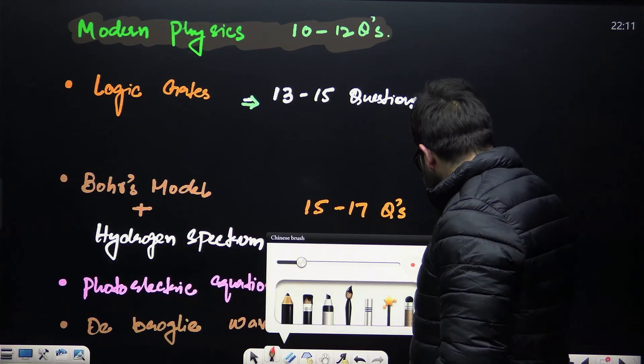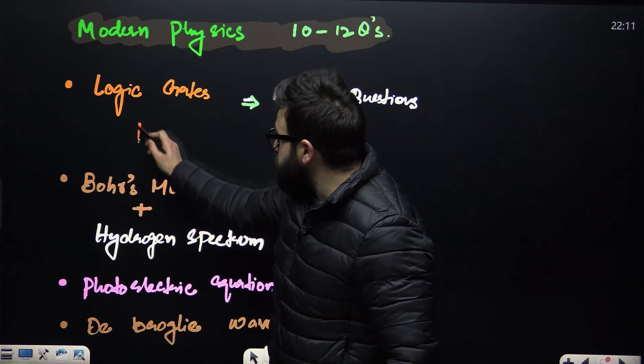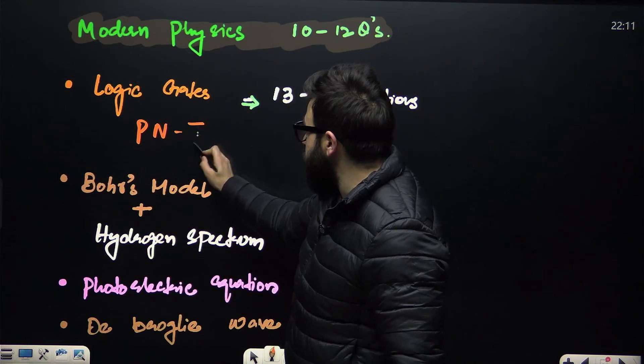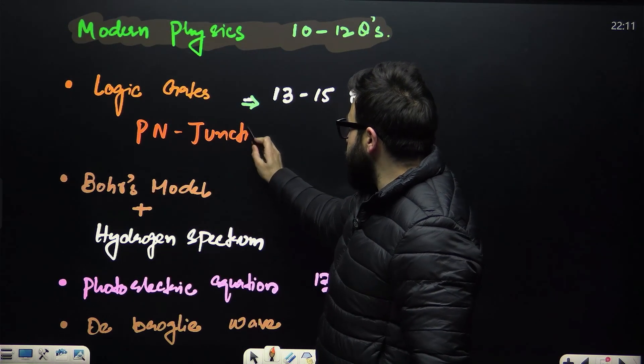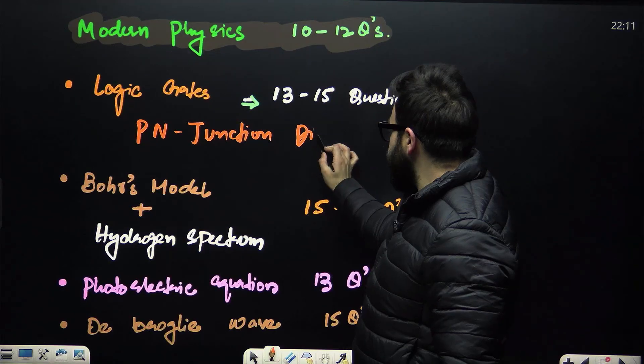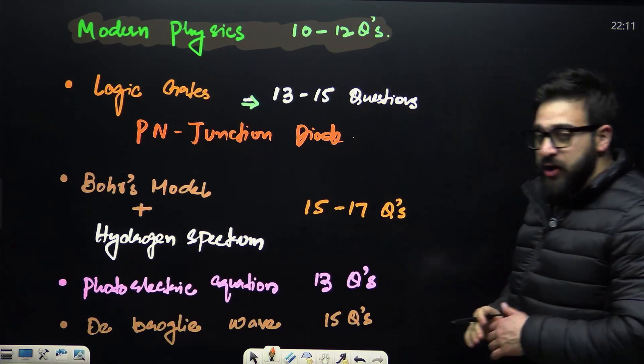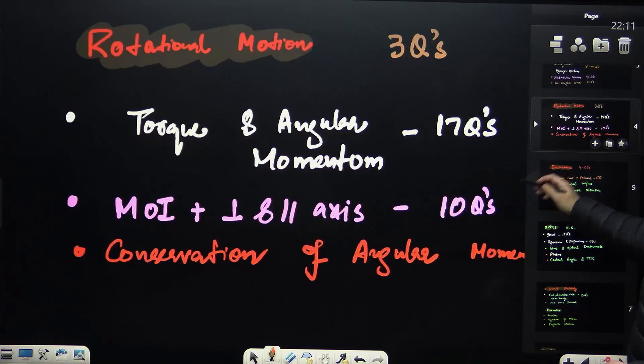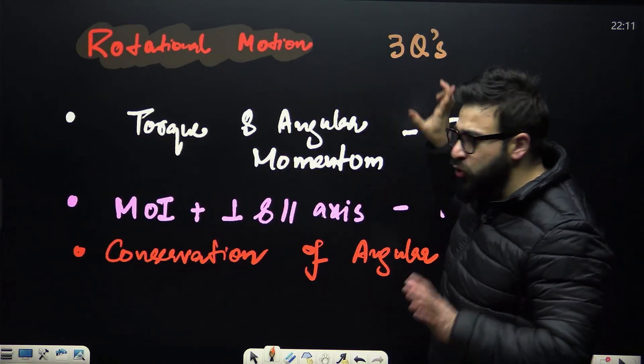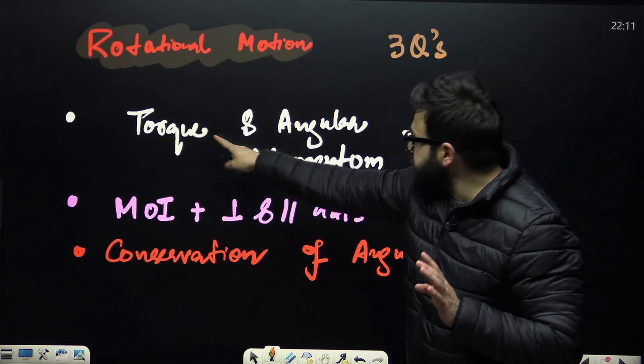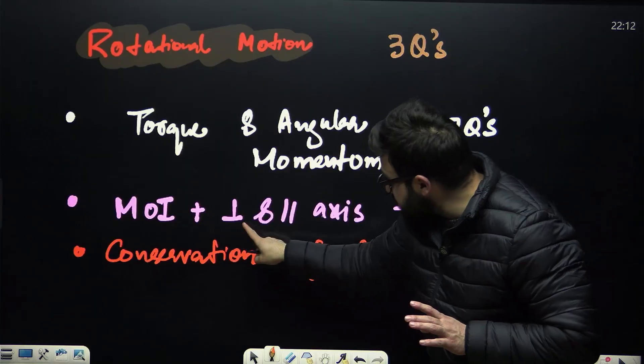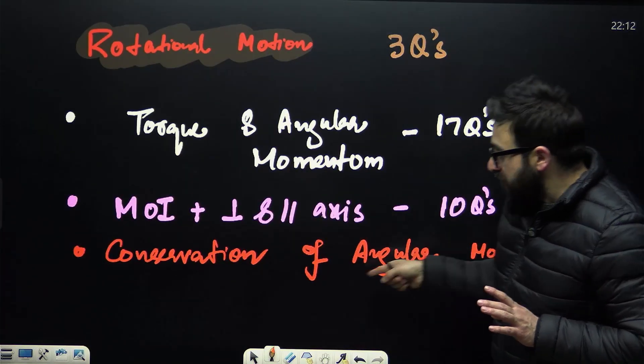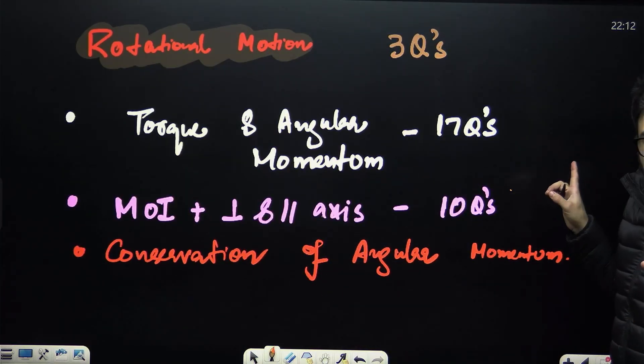What is that? That is PN junction diode. PN junction diode - make sure you do this also, PN junction diode, okay. And my dear NEET aspirants, next we say from the rotational motion portion, torque, angular momentum, moment of inertia, perpendicular and parallel axis theorem, and conservation of angular momentum also. This is also important, you guys need to do this.